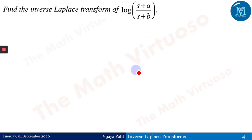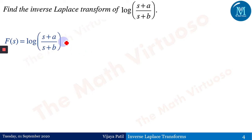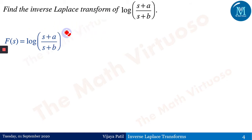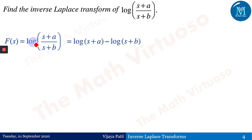Find the inverse Laplace transform of log((s+a)/(s+b)). If you observe this function F(s) as a logarithm, we do not have the direct inverse function here. So we need some adjustments — we can take the help of F'(s). Using the log property log(a/b) = log(a) − log(b), we write it as log(s+a) − log(s+b).